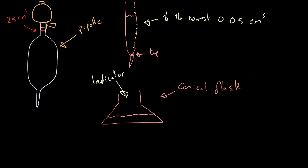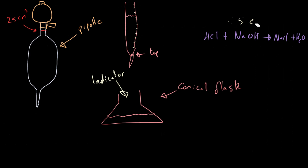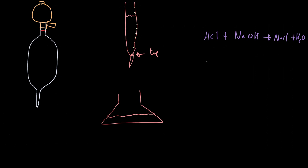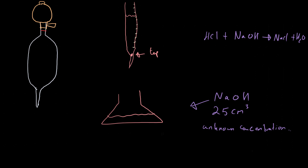Now let's look at a real example with actual numbers. We're carrying out the titration of hydrochloric acid plus sodium hydroxide, which gives sodium chloride plus water. We're going to put sodium hydroxide — NaOH — in the flask, at 25 cm³, with an unknown concentration, because that is what we want to work out.